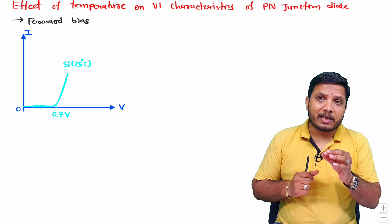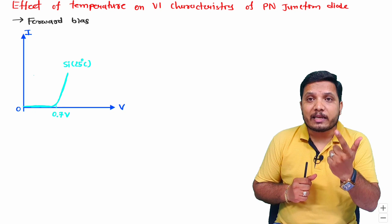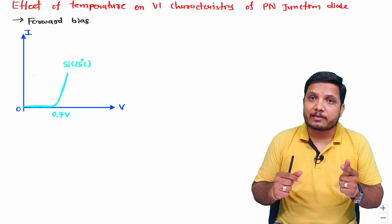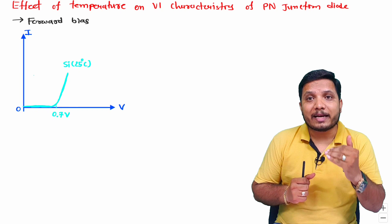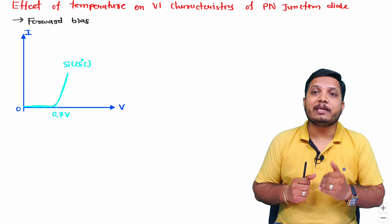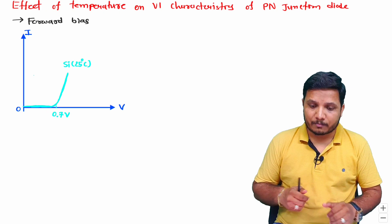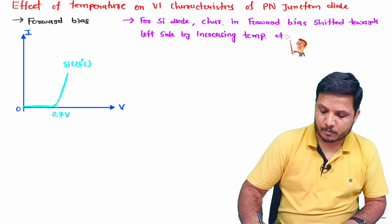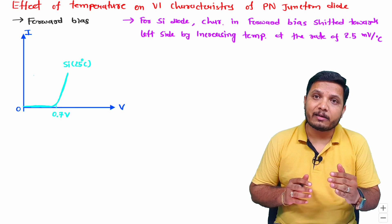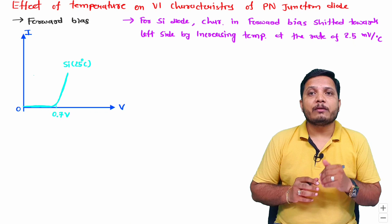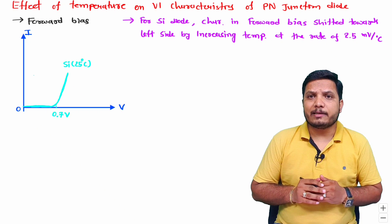The major thing we need to understand is what happens with a change in temperature. When you increase temperature, the characteristics will shift towards the left side at the rate of 2.5 millivolts per degree Celsius. Let me write this statement and then explain it with a practical example.